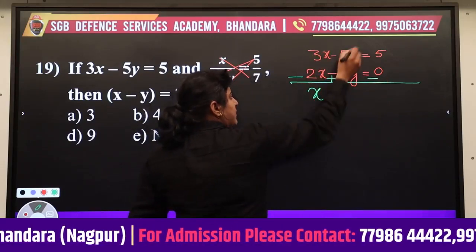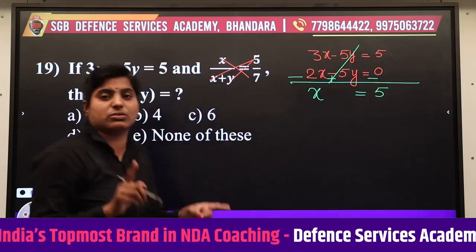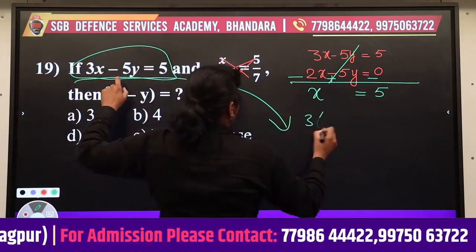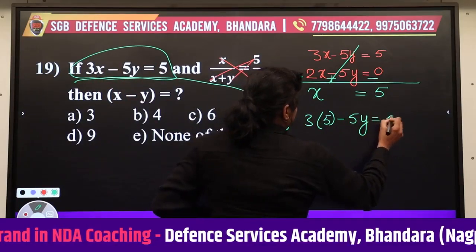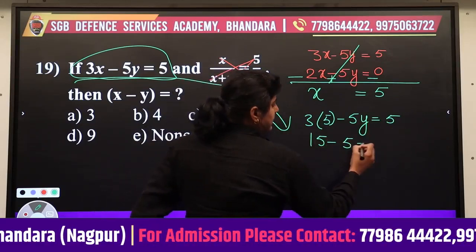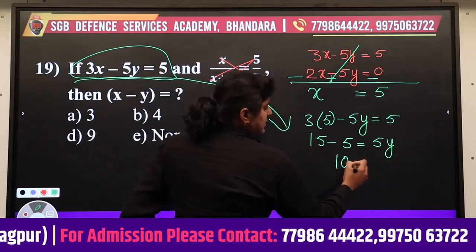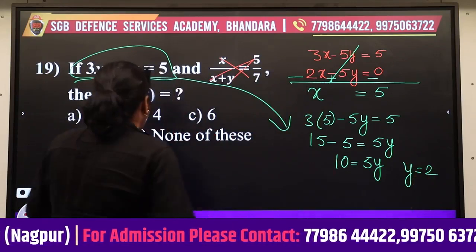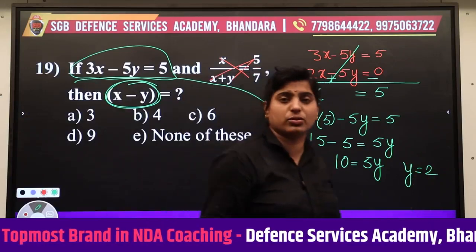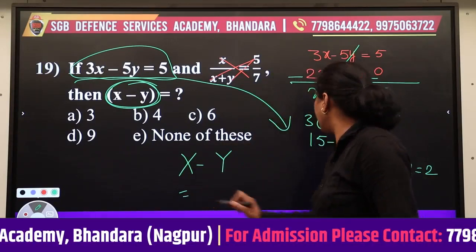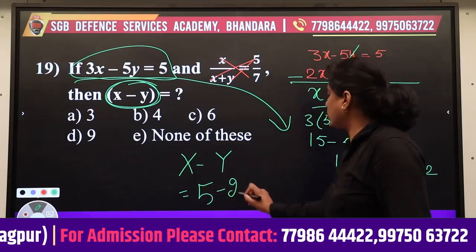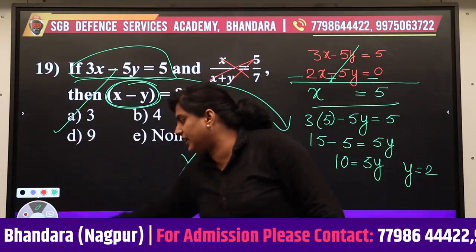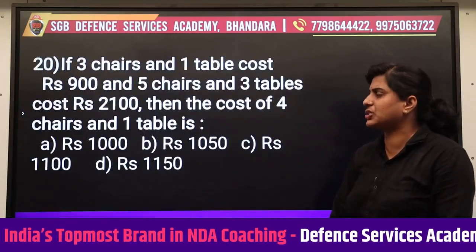Subtracting the equations: 3 - 2 = 1 cancels the x terms, giving x = 5. Substituting into 3x - 5y = 5: 15 - 5y = 5, so 5y = 10, and y = 2. Therefore x - y = 5 - 2 = 3. The correct answer is option 3.